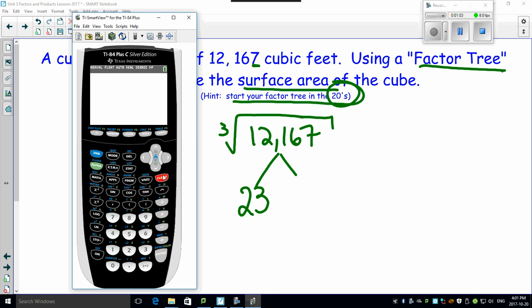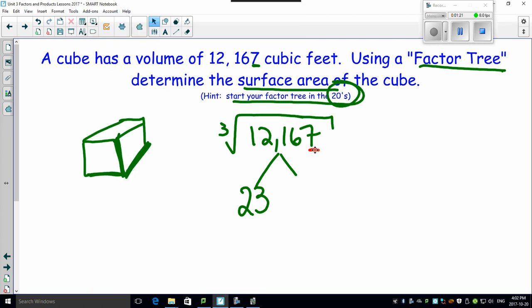I got 12,167. I'm going to try in my 20s. I'm going to try 21. If I try 21, it gives me a decimal. So I know that's not going to work. I'm not going to try 22 because that's not even.